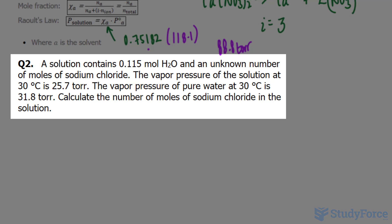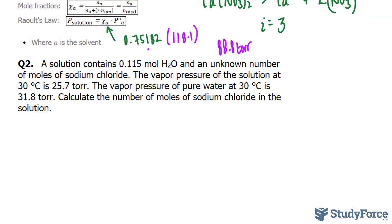Calculate the number of moles of sodium chloride in the solution. Unlike in question number 1, we're actually working backwards here. So they give us the pressure of the solution, and I'll highlight that, it's 25.7 torr.